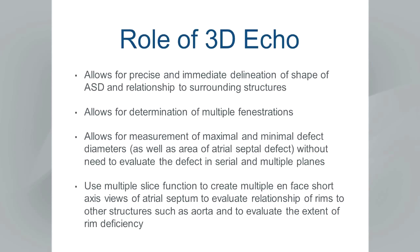3D echo allows for precise and immediate delineation of the shape of the ASD and its relationship to surrounding structures. It allows determination of whether there are multiple fenestrations, measurement of maximum and minimum defect diameters as well as the area, without the need to evaluate the defect in serial multiple planes. The multiple slice function creates multiple on-foss short axis views of the atrial septum to understand the relationship of the ASD, surrounding rims, and other important structures such as the aorta or atrial roof.